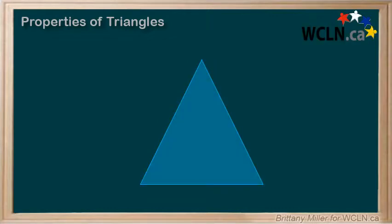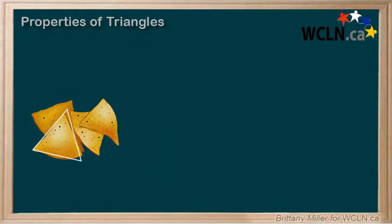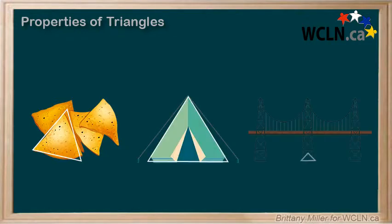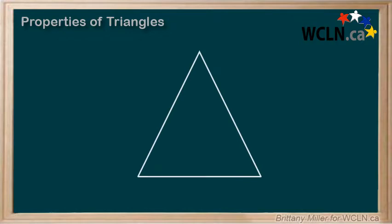Behold the majestic triangle. This beautiful polygon has three iconic sides and is found in tortilla chips, tents, and architecture across the globe. When we want to talk about a triangle in more detail, it's helpful to give it a name. This usually looks something like triangle ABC, where A, B, and C refer to the points of the triangle.